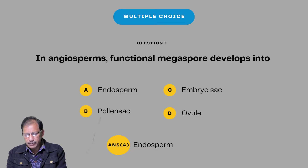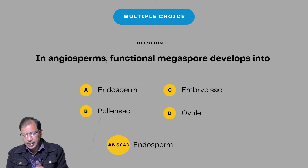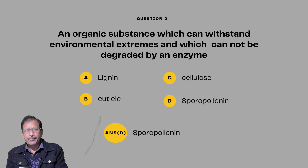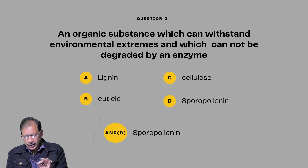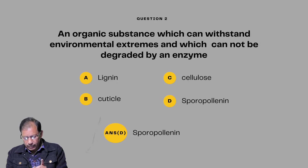Question number one: In angiosperm, the functional megaspore develops into — options are endosperm, pollen sac, embryo sac, and nucellus. Answer will be embryo sac. Question number two: An organic substance which can withstand environmental extremes and cannot be degraded by an enzyme — options are lignin, cellulose, and sporopollenin. Answer will be D, sporopollenin.